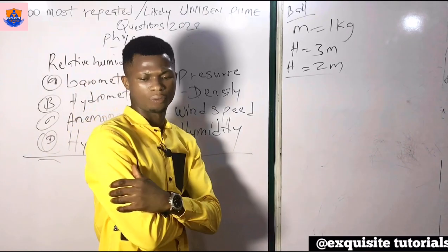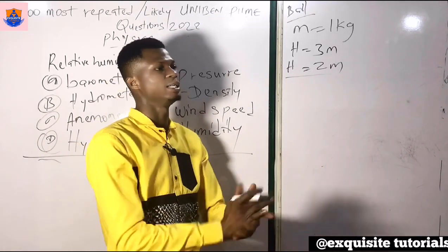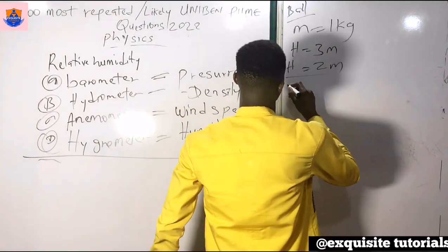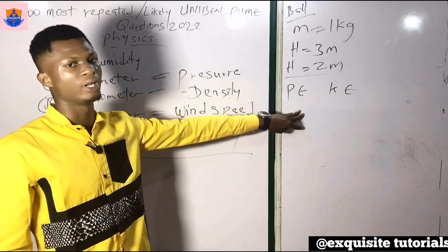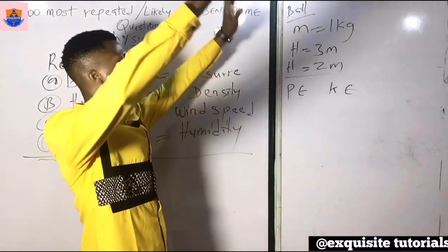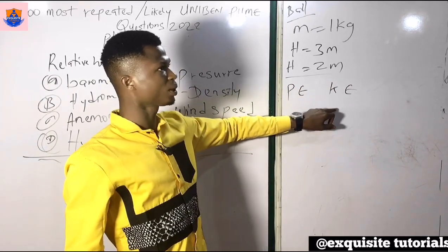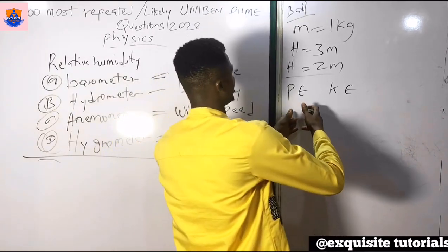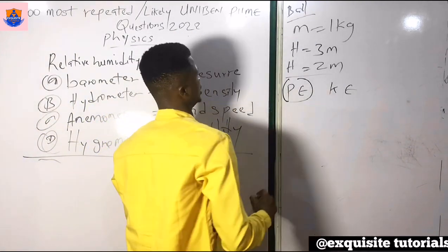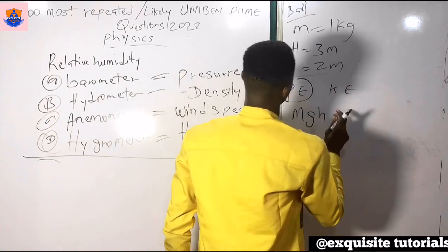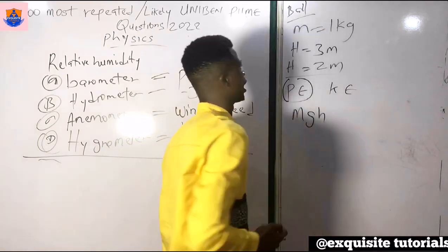We have potential energy (PE) and kinetic energy (KE). The ball was not performing any motion — it simply fell from a height with no horizontal distance covered. Therefore we use potential energy. The formula for potential energy is PE = mgh. We are given the heights, the mass m, and g = 10 m/s². To calculate energy loss, we subtract the rebound energy from the initial energy.